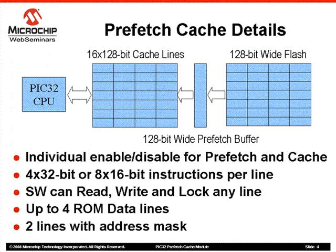This level of control allows the application to achieve different levels of determinism. The Prefetch Buffer is a 128-bit buffer with integrated logic to automatically fetch the next 128 bits of data based on the current instruction the CPU is executing. The cache memory is divided into 16 lines of 128-bit data. Each line may hold either four 32-bit instructions or eight 16-bit instructions. Out of 16 cache lines, software may reserve up to four lines for ROM or constant data storage. This feature is useful if the application is going to make frequent accesses to constant data.